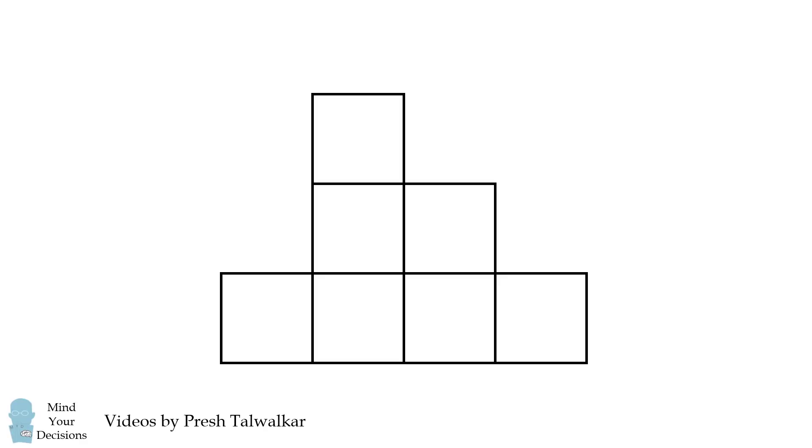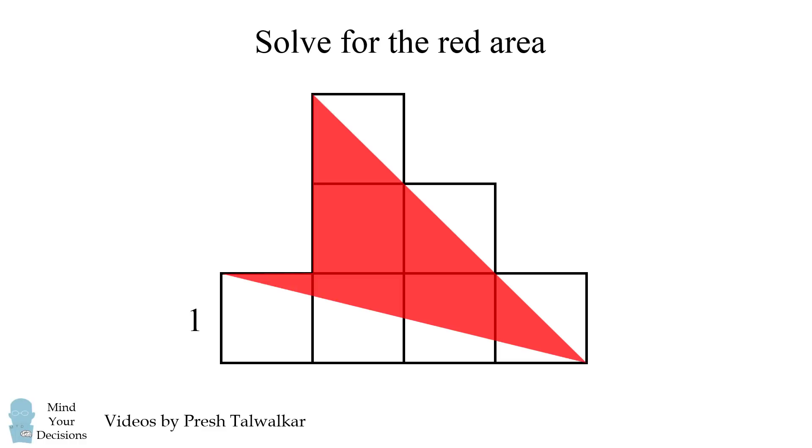Here's a fun geometry problem. In the following shape, each of the small squares has a side length of one. The challenge is to figure out the area of this red shape. Can you figure it out? Give this problem a try, and when you're ready, keep watching the video for a solution.